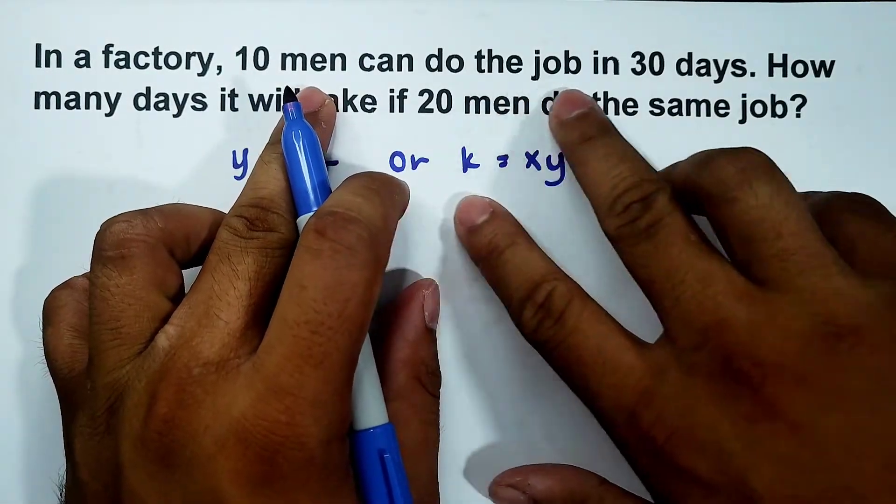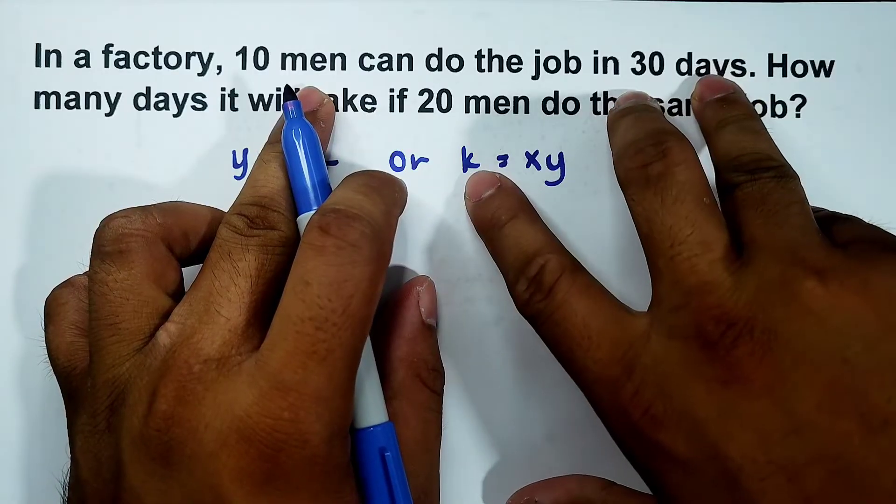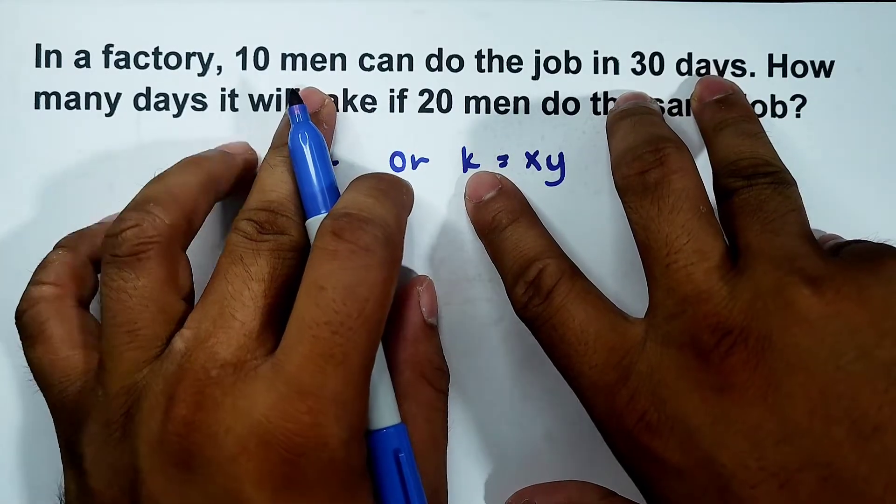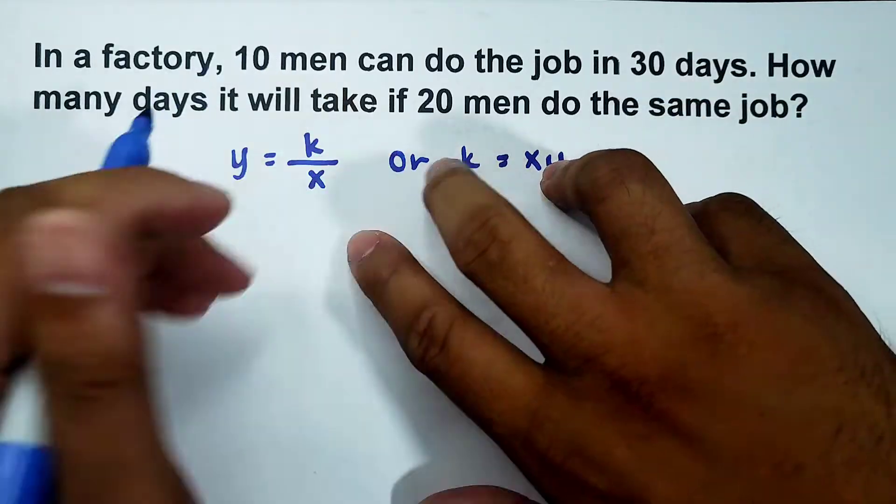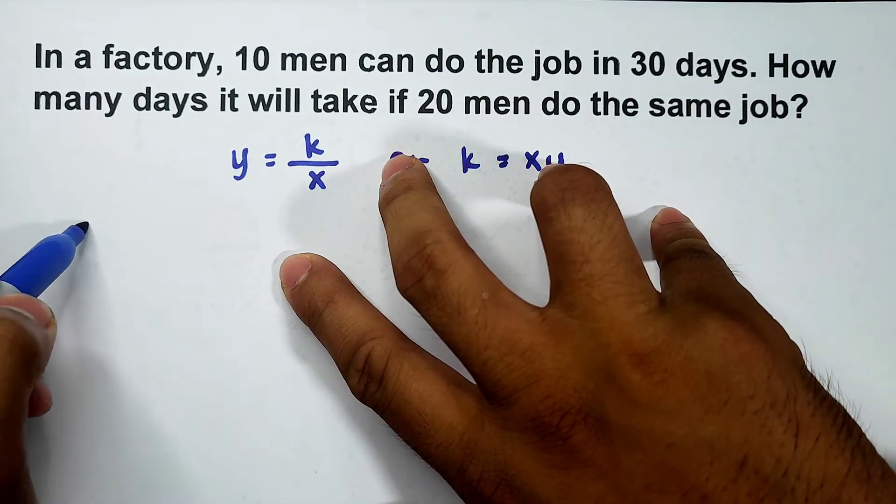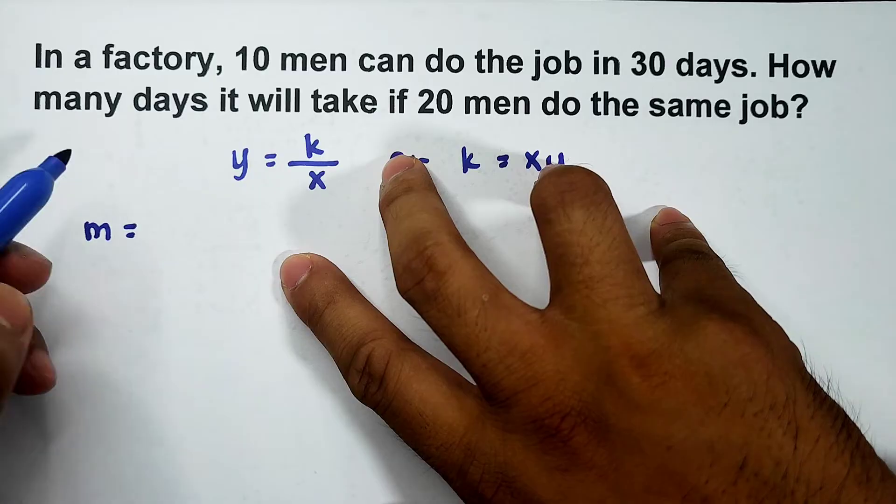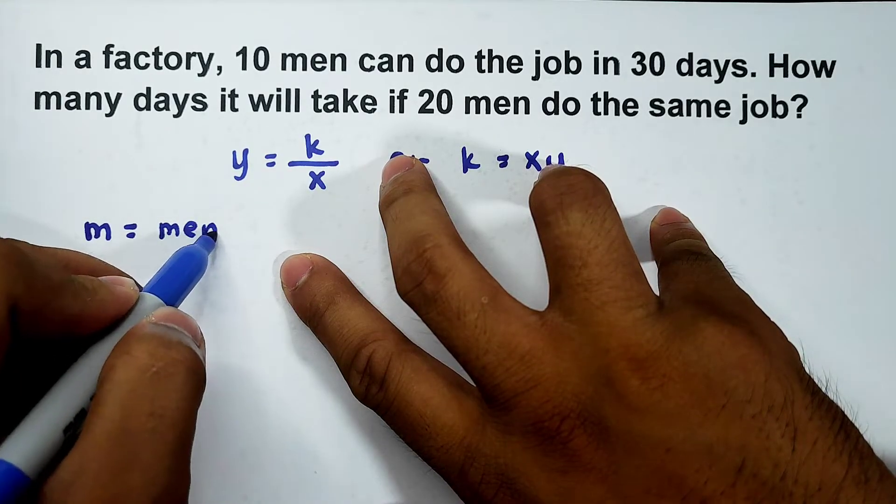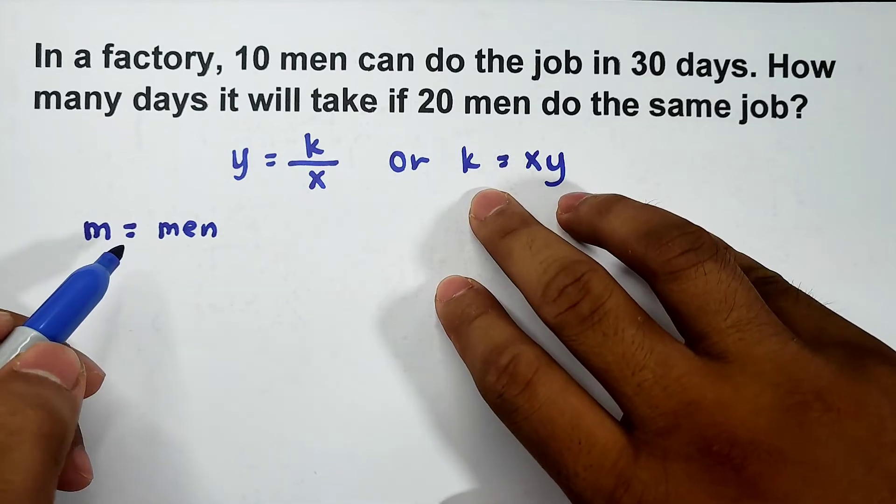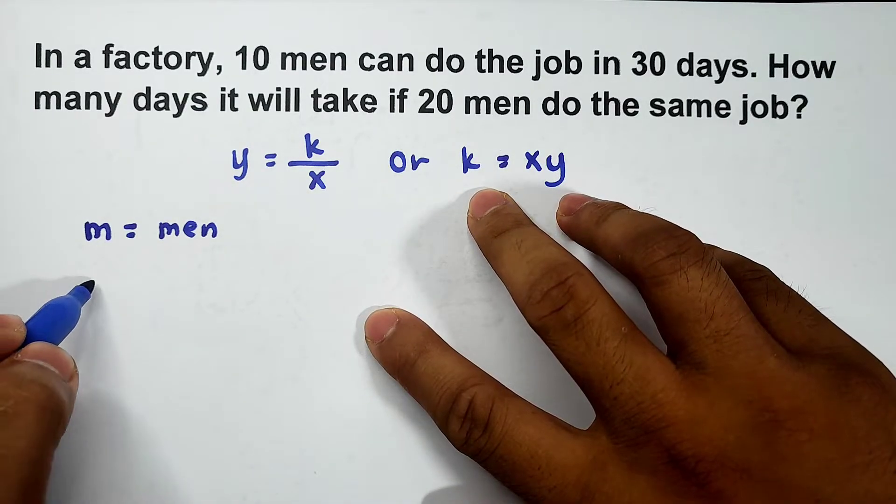10 men can do the job in 30 days, so dalawa yung ating quantities dito. We have the 10 men and 30 days. So yung men natin, i-represent natin siya bilang m. Okay, m represents the number of men. Yung d naman natin will represent the number of days.